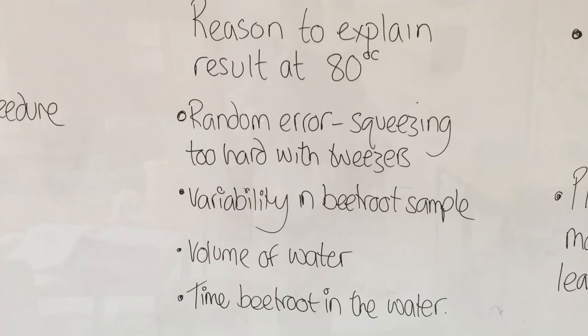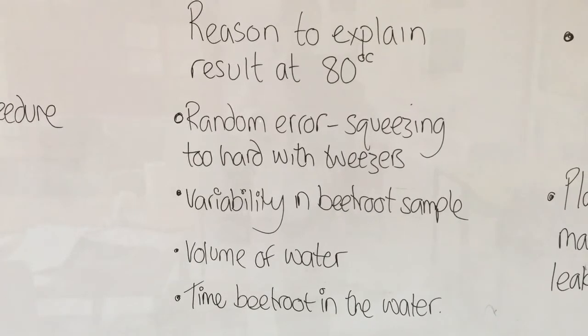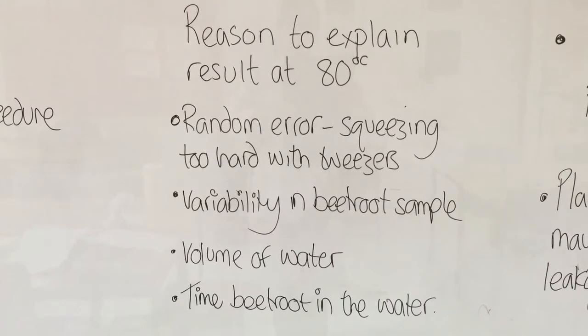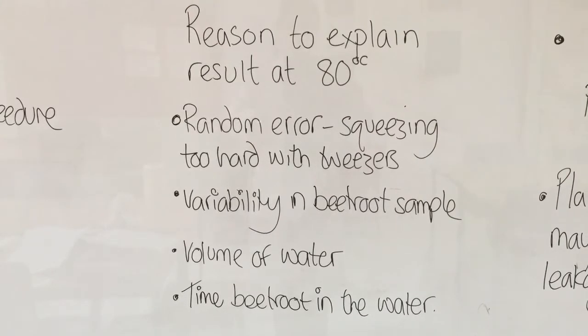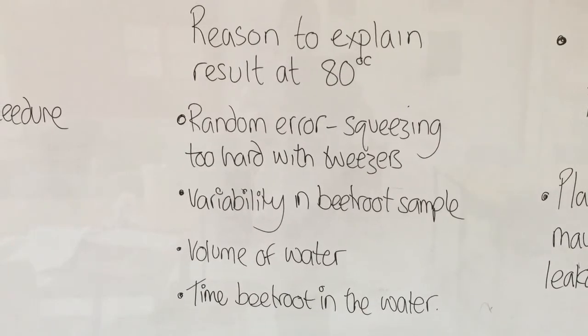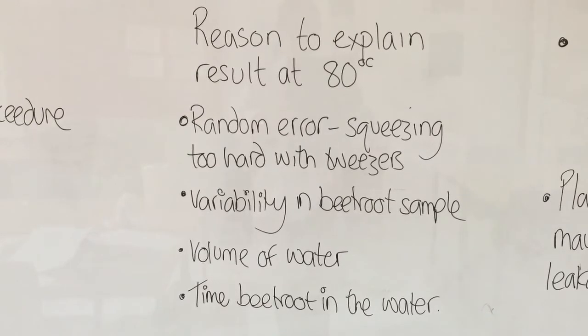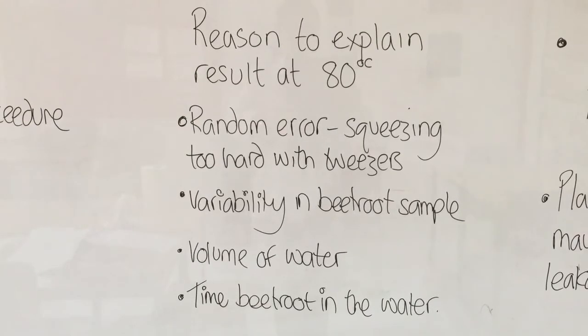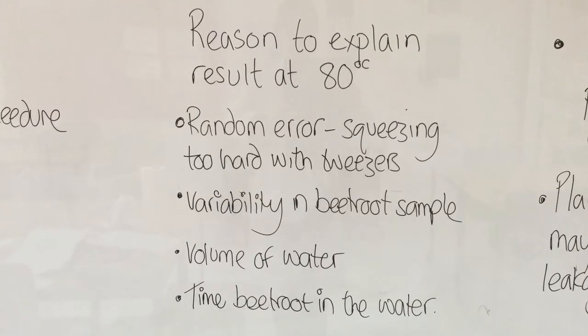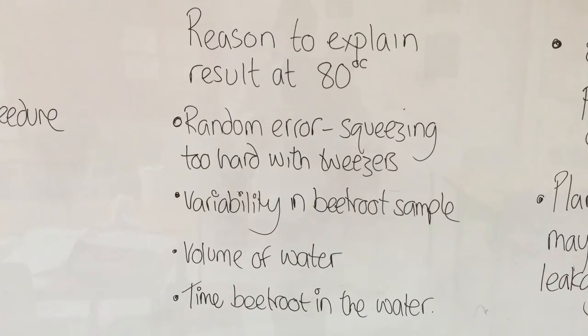Additionally, there could have been variation within our beetroot sample. At the beginning, we saw that there were some areas that were more pigmented than others. Human error could have varied the amount of water in each boiling tube. The sample at 80 degrees could have also been decanted a little bit quicker than that at 60 and 85. If it was decanted a little bit quicker, then there was less time for the pigment and therefore a slight increase in the transmission of light through it.